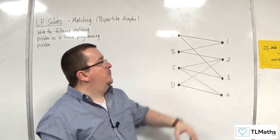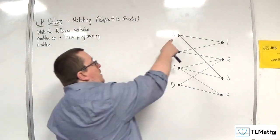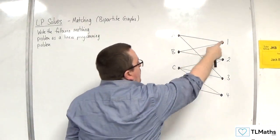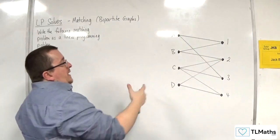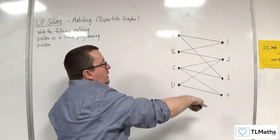Well, sorry, the arcs or the edges represent that worker A can do job 1 or job 3, B can do job 1 or job 2, C can do job 2, 3, and 4, and D can do job 2 and job 4.